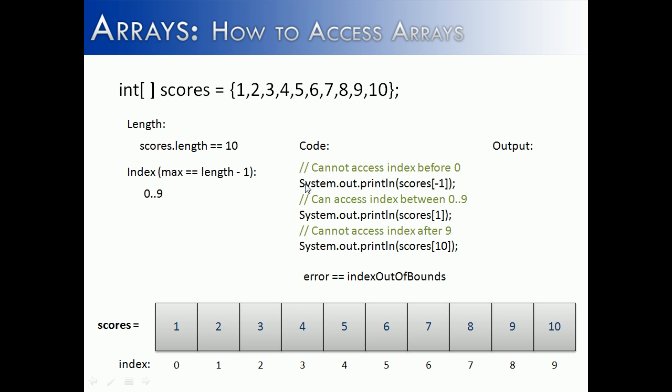So what this works out to be in the code is if we try to access something before 0, and this is kind of an uncommon error, but if we tried to say, what's at the negative 1 index, we would get an error. If we tried to access inside of the range of 0 to 9, which in this case we're trying to access 1, which is not the first index, the first index would be 0, we would get a 2.